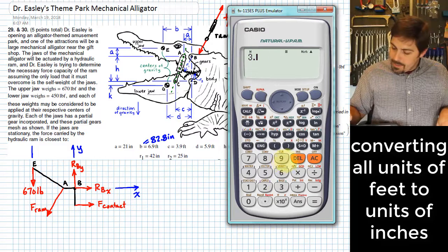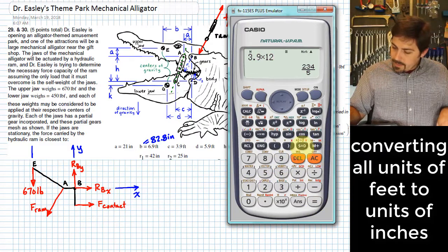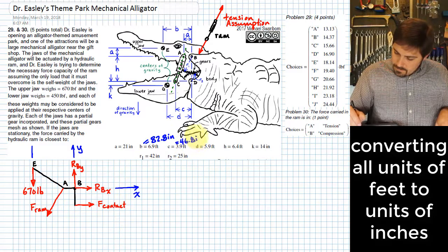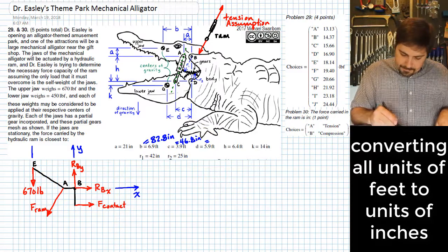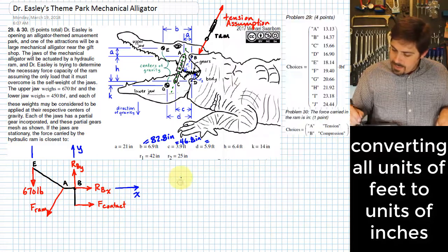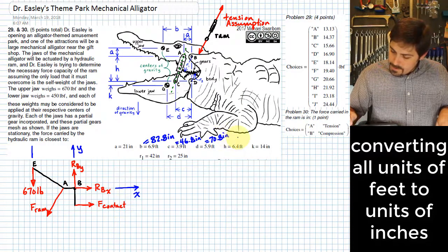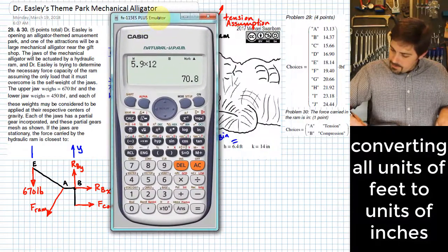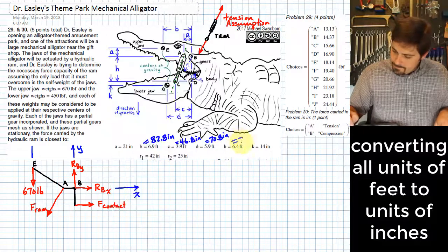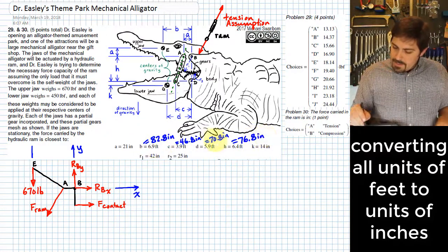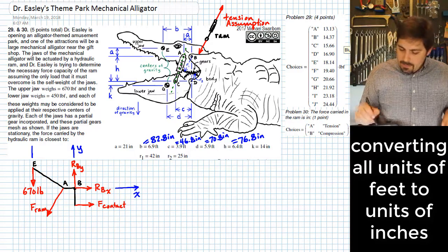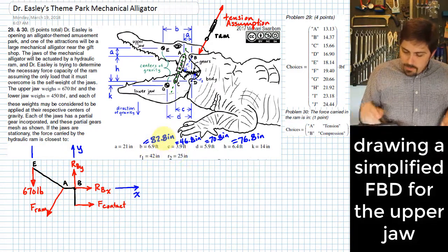And while I'm here, I may as well do that for all of these. 3.9 times 12 gives me 46.8 inches. D, 5.9 times 12 gives me 70.8 inches. And finally, H, which is 6.4. 6.4 times 12 gives me 76.8 inches. That takes care of converting each of those values into a number that's in inches, which will make it easier for me to deal with in my free body diagram and on my equation.